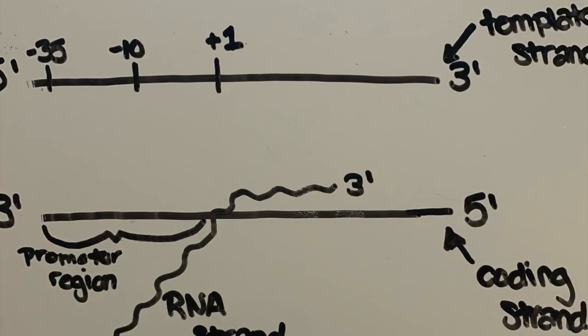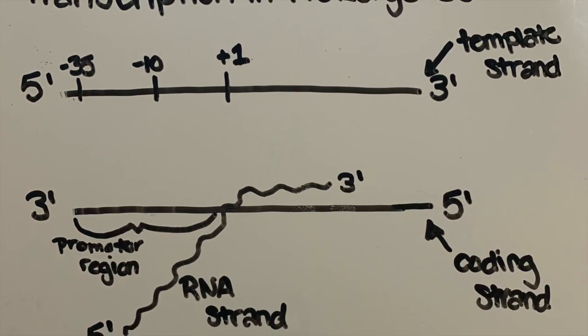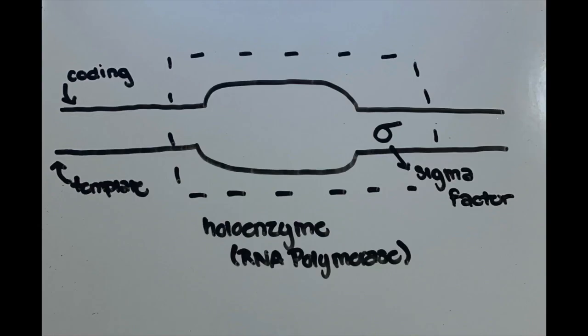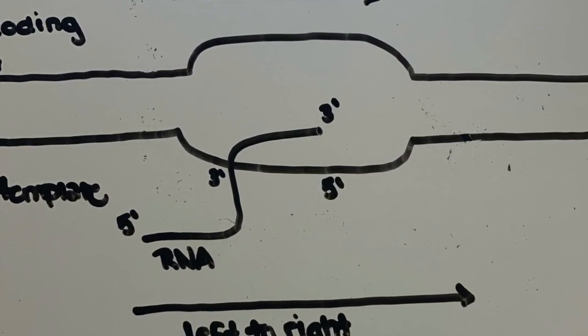Moving even further upstream, we reach the -35 consensus sequence, which is also involved in RNA polymerase binding. RNA polymerase forms phosphodiester bonds in the 5' to 3' direction. The sigma factor subunit is part of the holoenzyme and helps recognize the promoter and allows RNA polymerase to start transcription. The sigma factor is then released as polymerase moves down the chain.